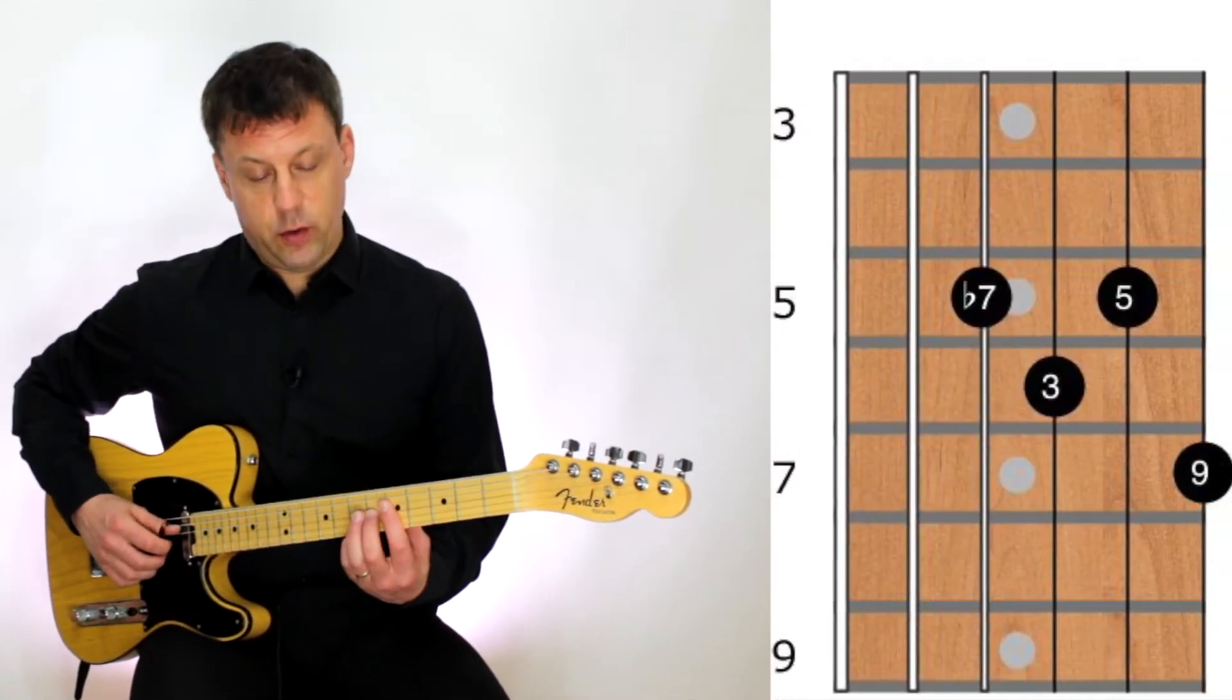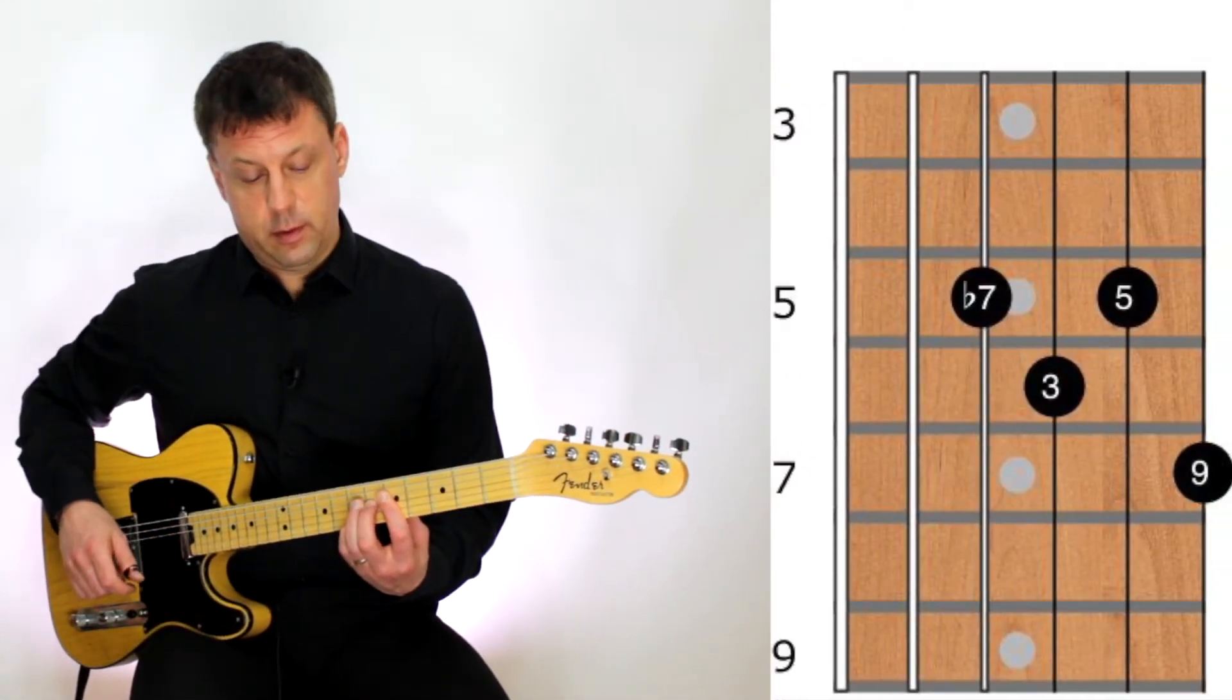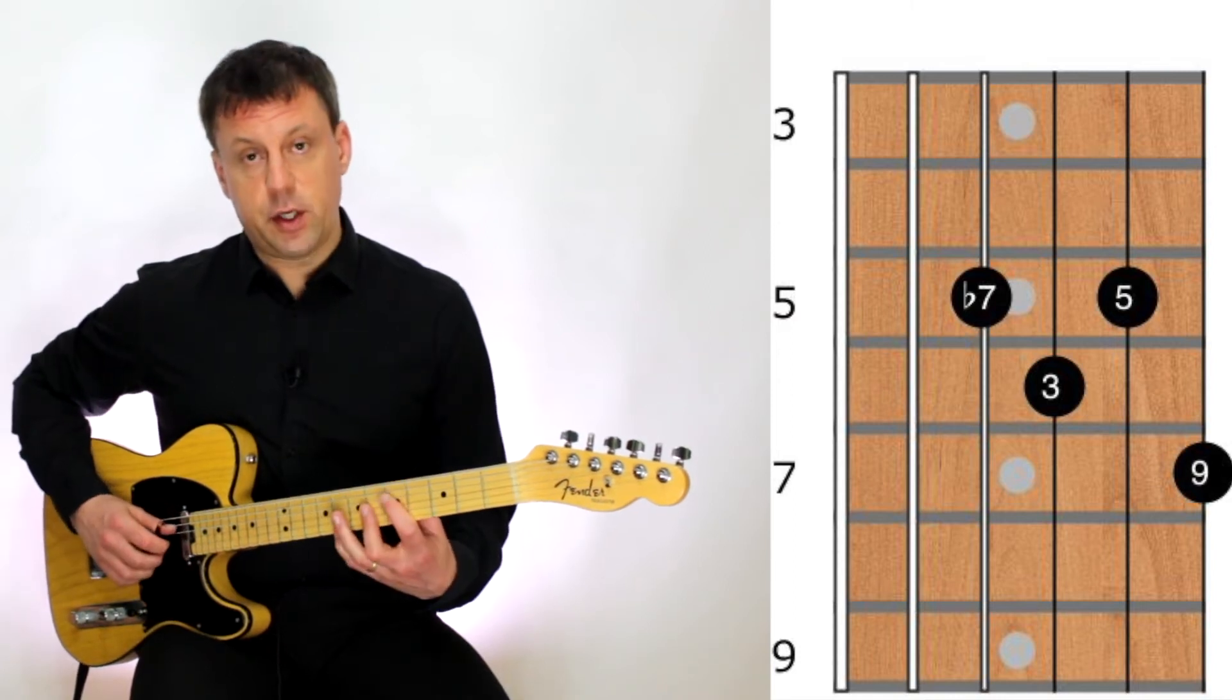All of the chords in this example are played on the top four strings. So we're going to start off with an A dominant 9 chord, followed by an A dominant 7 with a sharp 5 and a sharp 9.